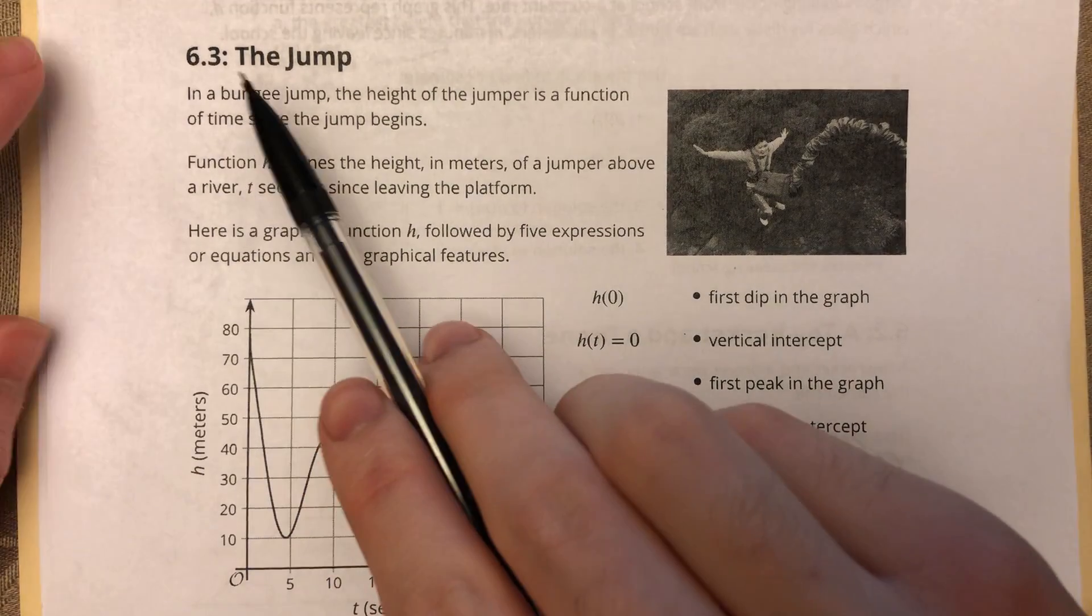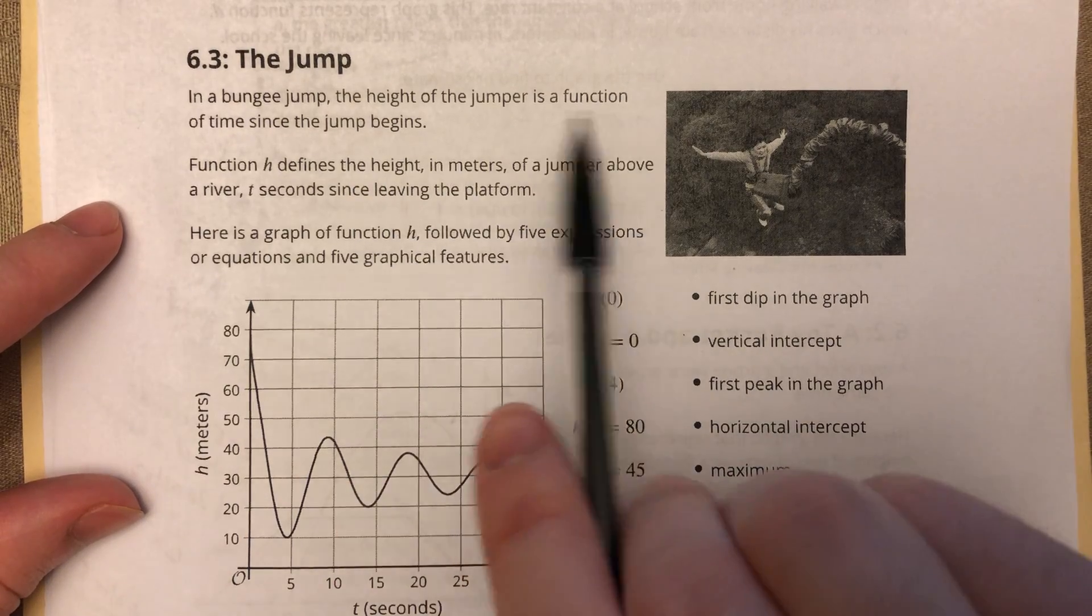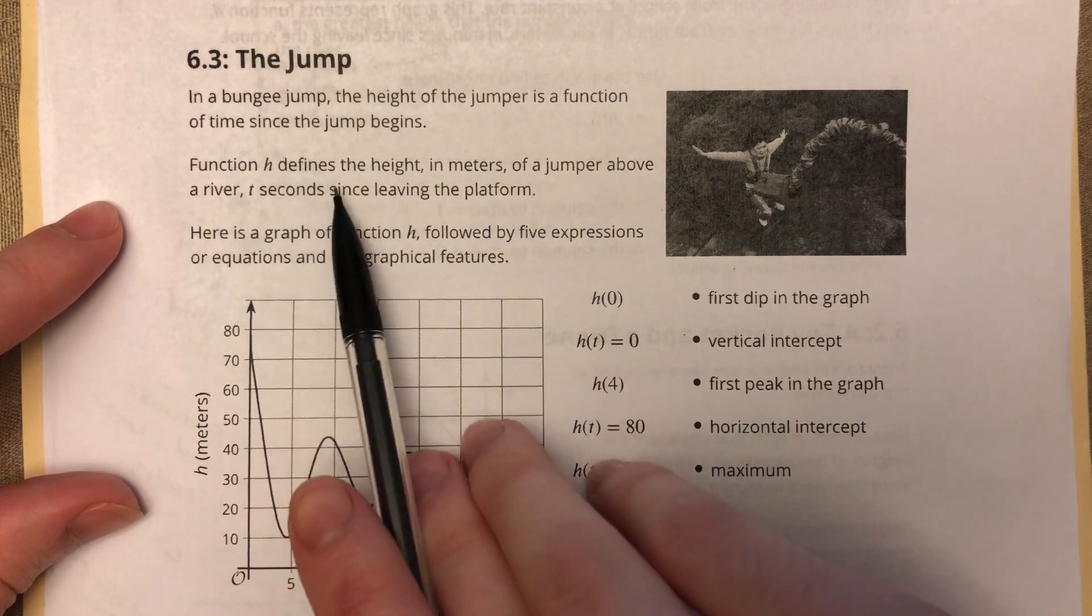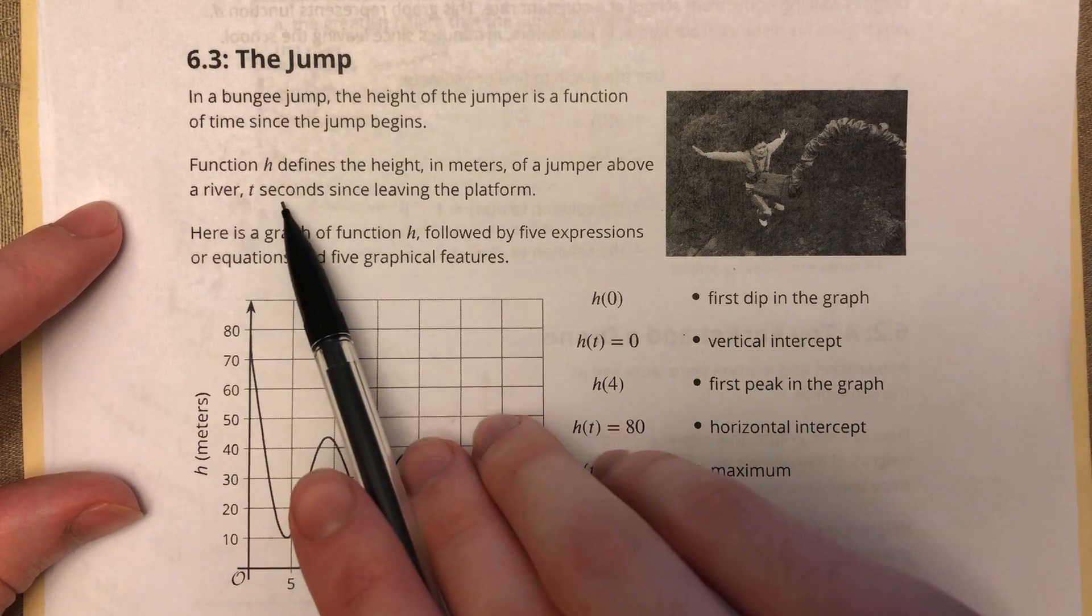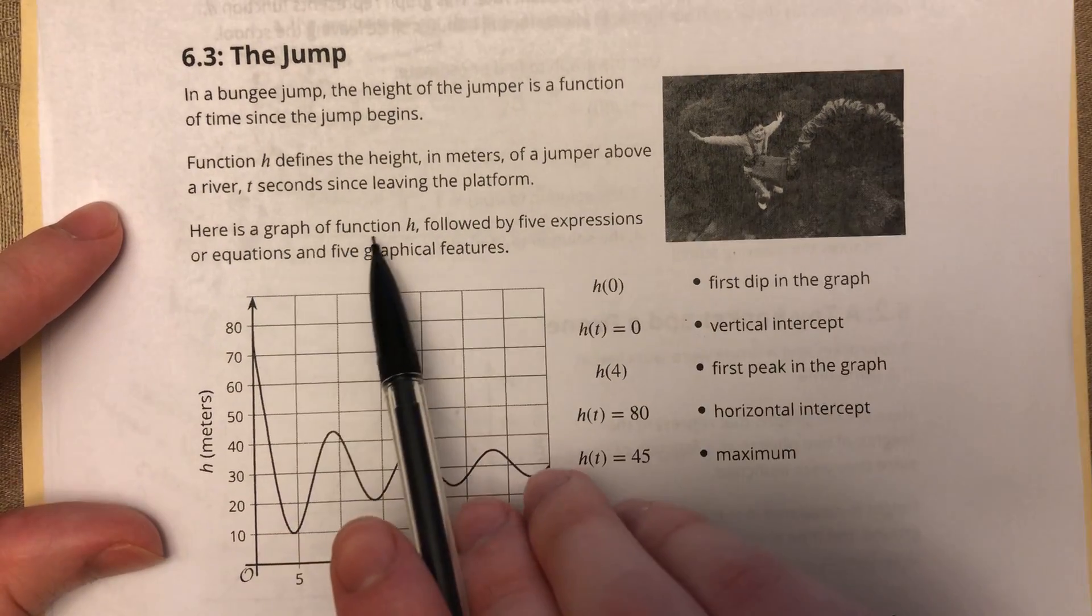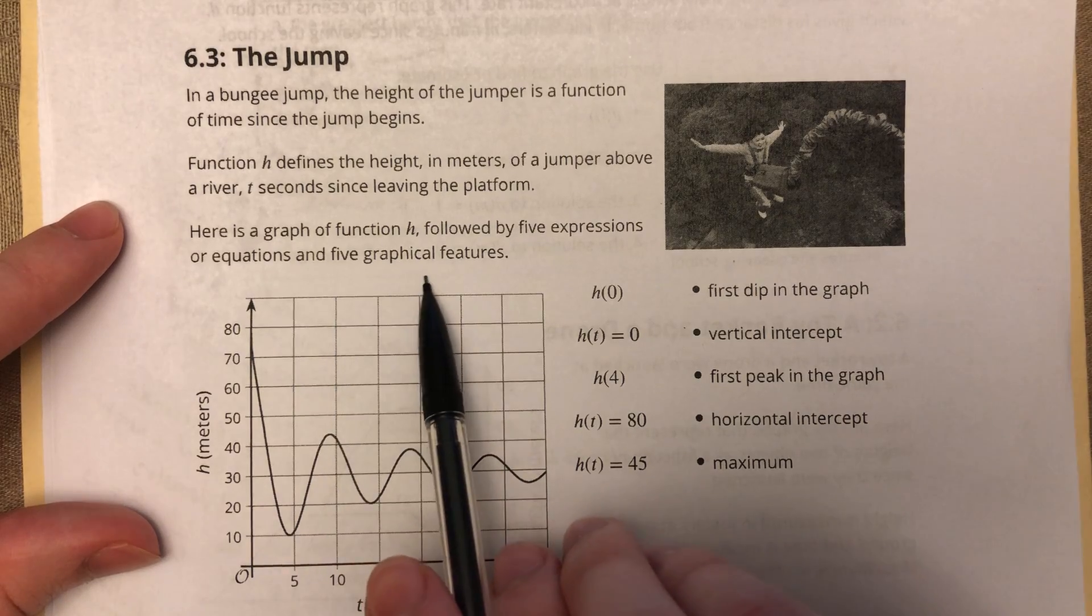Alright, 6.3, the jump. In a bungee jump, the height of the jumper is a function of time since the jump begins. Function h defines the height in meters of a jumper above a river t seconds since leaving the platform.